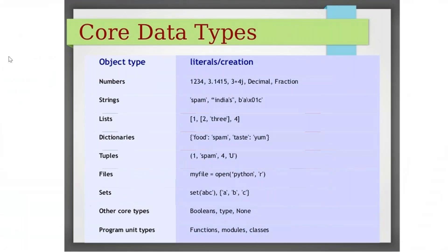How do we define these data types? Numbers we define just like that — 1, 2, 3, 4, or 3.14 for float, complex, decimal, fraction. For the list, it's in square brackets. Dictionary is in curly braces. Tuples in parentheses. This is a very important interview question: list, dictionary, and tuples.